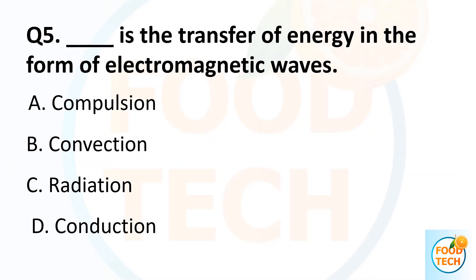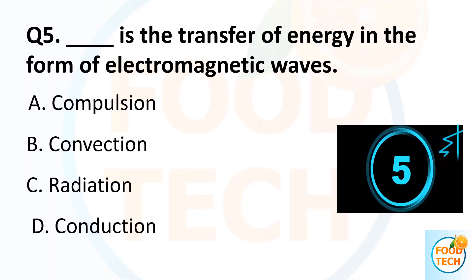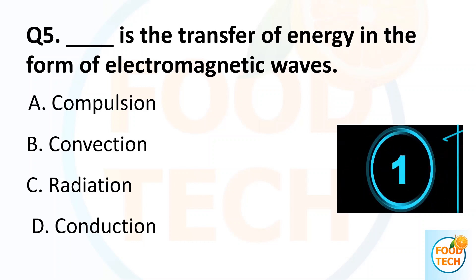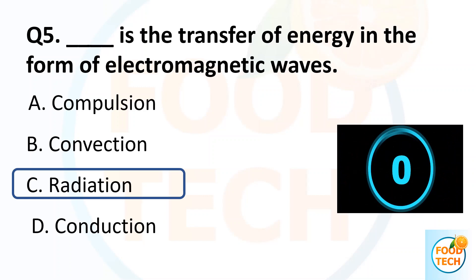Question 5. Dash is the transfer of energy in the form of electromagnetic waves. A. Compulsion. B. Convention. C. Radiation. D. Conduction. Answer C. Radiation.